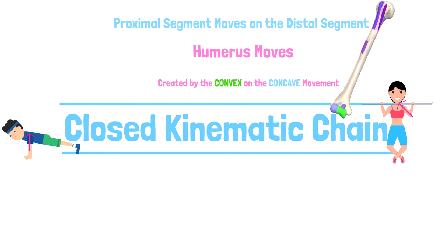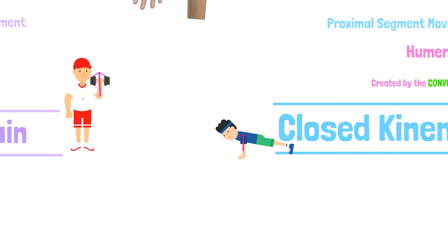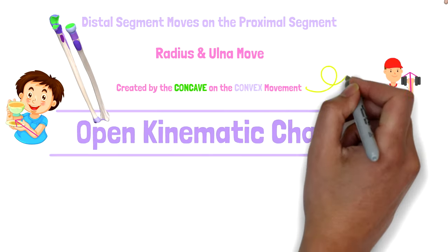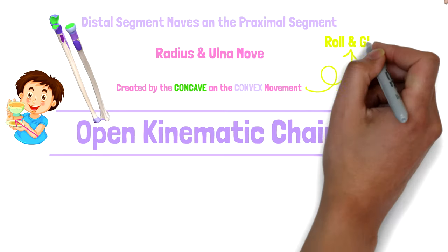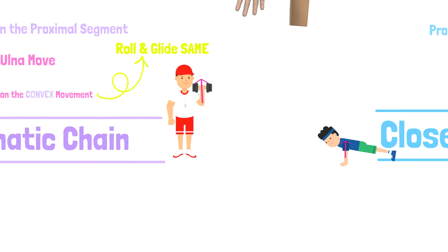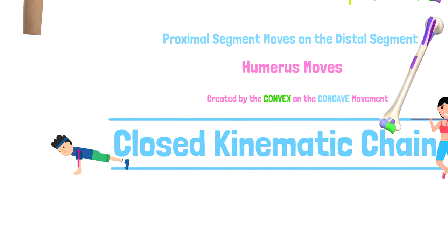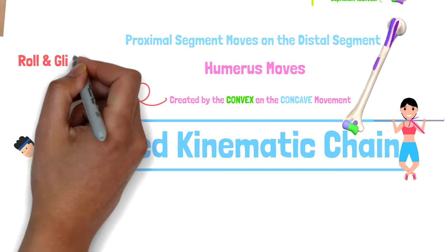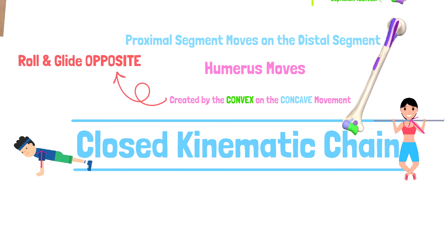Remember: when a concave object moves on a convex, the roll and the glide will occur in the same direction. But when a convex object moves on a concave, the roll and the glide will occur in opposite directions.